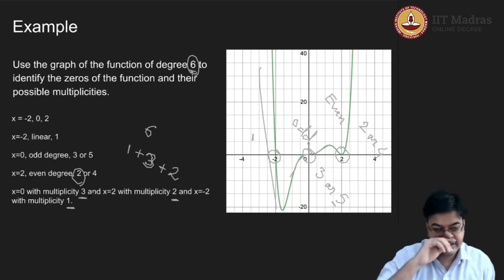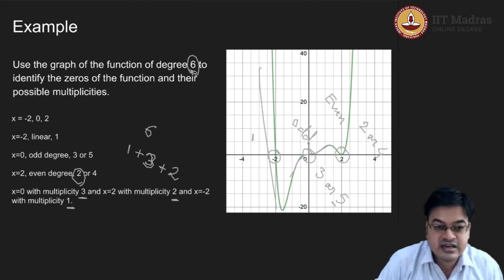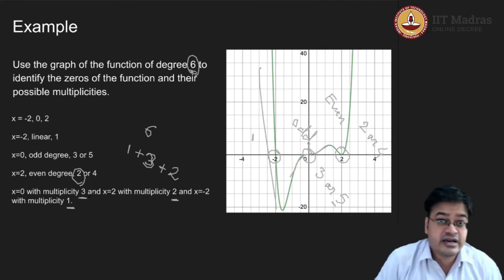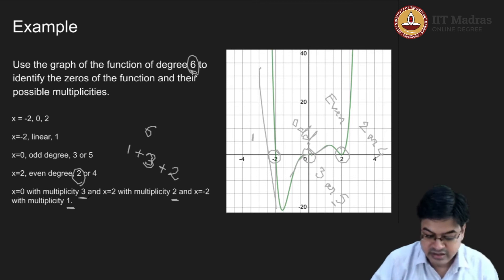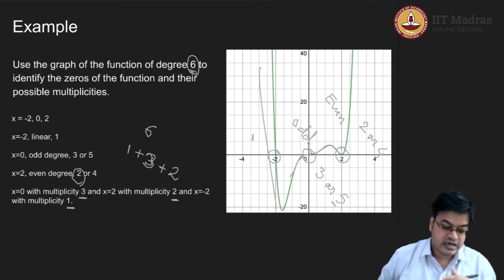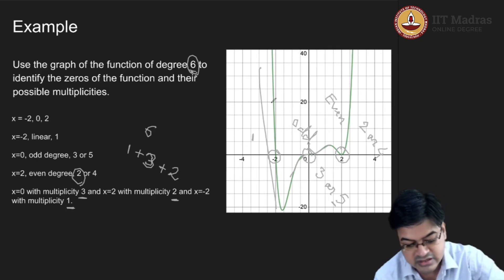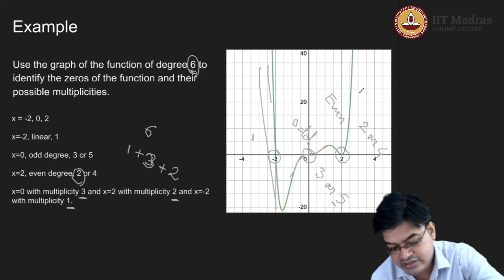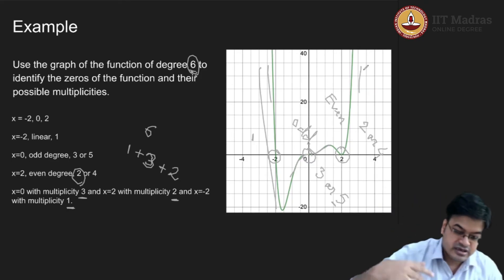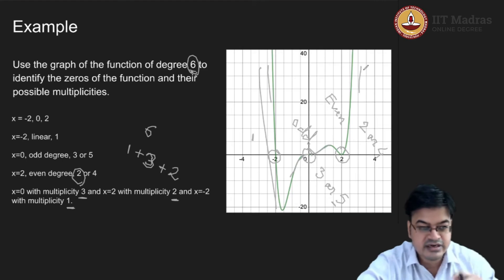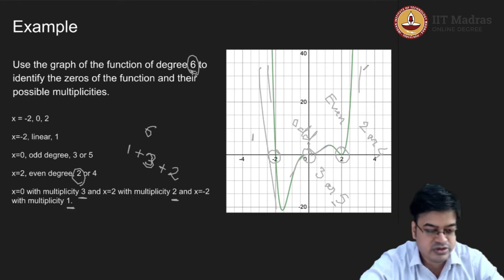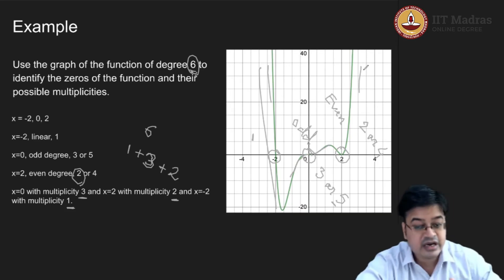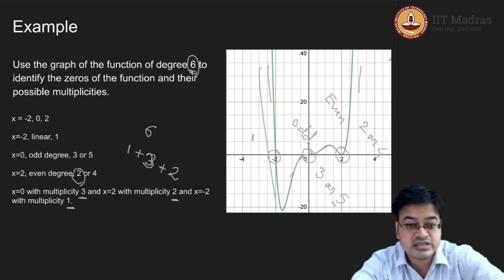This is how we identify the factors and zeros of the functions and their multiplicities. This approach is much better for drawing the graph of a function. We still have not fully explained why the graph goes to infinity on both ends — we will come to that later.